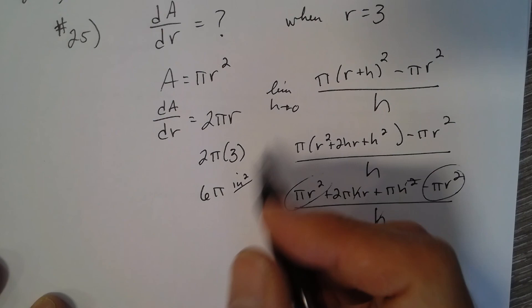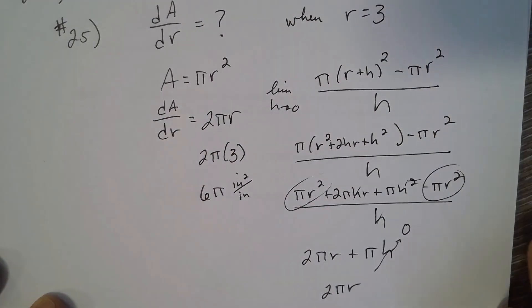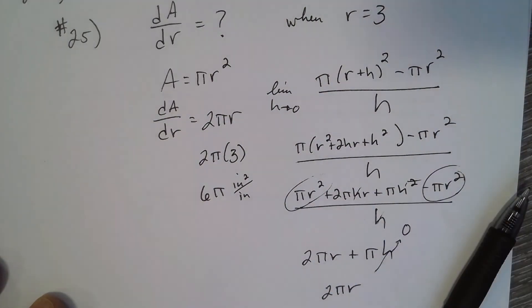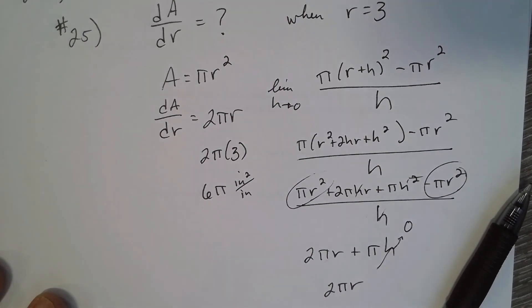Per radius per inch, so it'd be 6π inches.